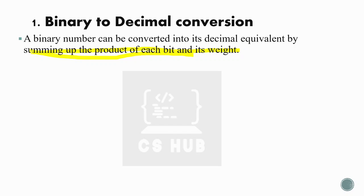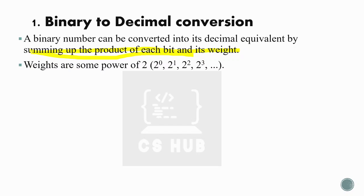Every number system — binary, decimal, octal, hexadecimal — is a positional number system, meaning each digit has a weight. In a binary number system, the weights are powers of 2, because the base is 2. So the weights are 2 raised to 0, 2 raised to 1, 2 raised to 2, and so on. What we have to do is multiply each weight by its corresponding bit and sum all those products.